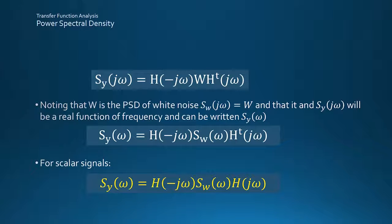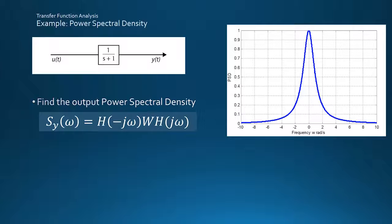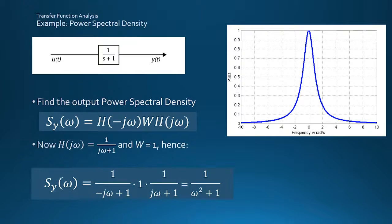Returning to our first order filter example, substituting the transfer function, replacing the Laplace s by j omega, and the signal strength into the formula gives the resulting double-sided spectrum, emphasizing the low-pass filter action.